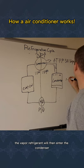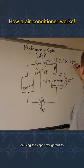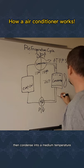The vapor refrigerant will then enter the condenser, where heat is rejected into the atmosphere, causing the vapor refrigerant to condense into a medium-pressure, medium-temperature,